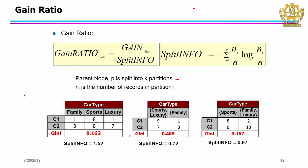Whatever information gain we get is divided by the split info to get the gain ratio. Looking at the three cases with split info values 1.52, 0.72, and 0.97 — if there are many outcomes, split info is more. Card type has 3 branches so split info is higher; binary attributes have 2 branches so split info is lower. Dividing by a larger number balances the decision of which attribute to choose.